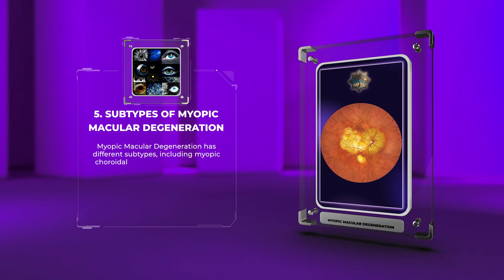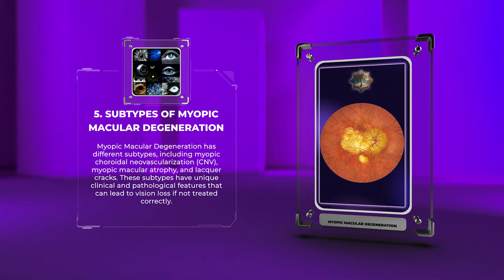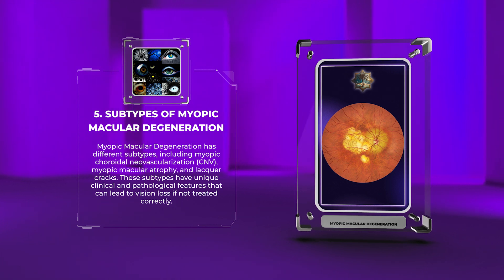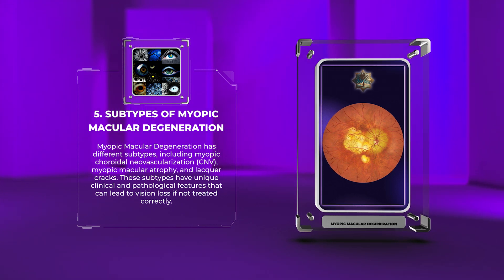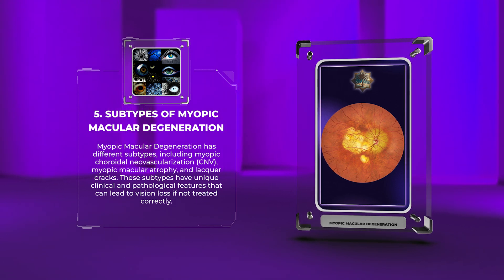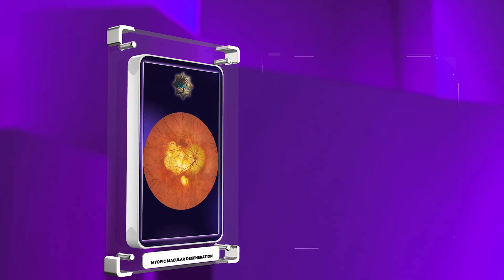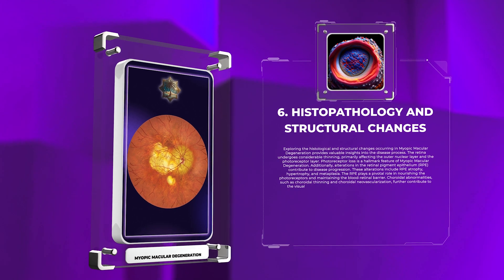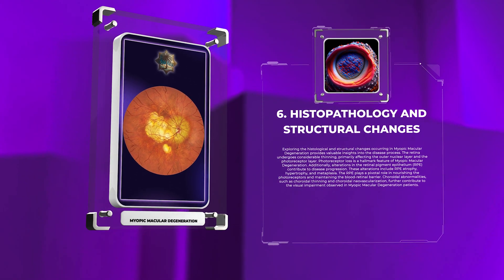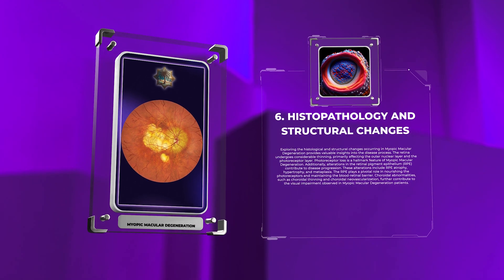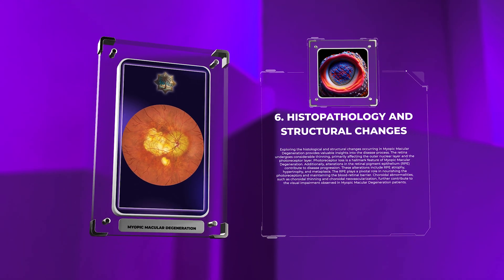Myopic macular degeneration has different subtypes, including myopic choroidal neovascularization (CNV), myopic macular atrophy, and lacquer cracks. These subtypes have unique clinical and pathological features that can lead to vision loss if not treated correctly. Exploring the histological and structural changes provides valuable insights into the disease process. The retina undergoes considerable thinning, primarily affecting the outer nuclear layer and the photoreceptor layer.